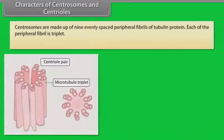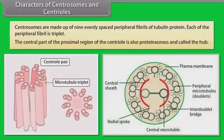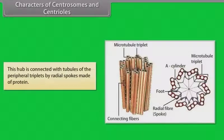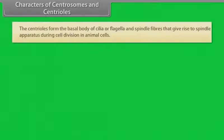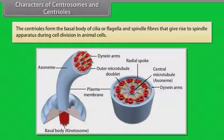Centrioles are made up of nine evenly spaced peripheral fibrils of tubulin protein, and each peripheral fibril is a triplet. The central part of the proximal region of the centriole is proteinaceous and called the hub, which is connected with tubules of the peripheral triplets by radial spokes made of protein. The centrioles form the basal body of cilia or flagella and spindle fibers that give rise to the spindle apparatus during cell division in animal cells.